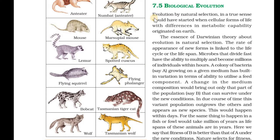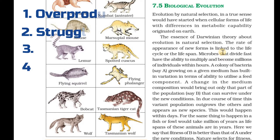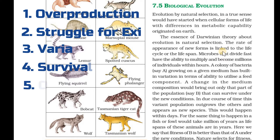I am going to read the theory of natural selection. Charles Darwin has written this theory. The main points are: 1. Overproduction, 2. Struggle for Existence, 3. Variation, 4. Survival of the Fittest, 5. Origin of New Species.